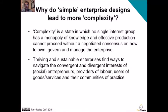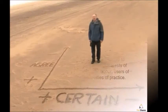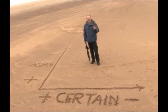There's plenty of research evidence that thriving and sustainable enterprises find ways to navigate bringing different groups together while also managing their divergent interests. Entrepreneurs, providers of labour and users of goods and services don't necessarily share interests and live in different communities of practice. What I'm now going to do is play a short video about Ralph Stacey's complexity theory and how simple organisations try to run themselves in a way that does not address complexity. All Ralph Stacey did — it was absolutely brilliant — was combine two axes.